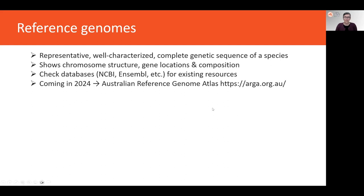If you're in Australia, coming in 2024, the Australian Reference Genome Atlas should be going online. This is a platform that aggregates genomic data from each of these different databases and provides it in a more easy, friendly-to-use, discoverable platform.